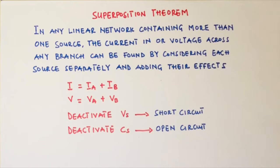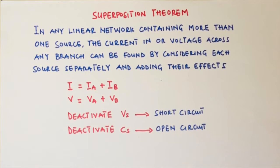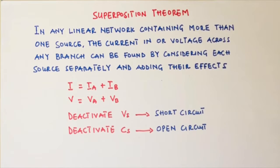In summary, if you have more than one source — let's say two sources in a circuit — and you want to find the current or voltage across a particular branch, you consider the first source at a time and deactivate the second source and solve. After that, you deactivate the first source and activate the second source and solve. At the end, you sum up the current components or the voltage components depending on what you are looking for.